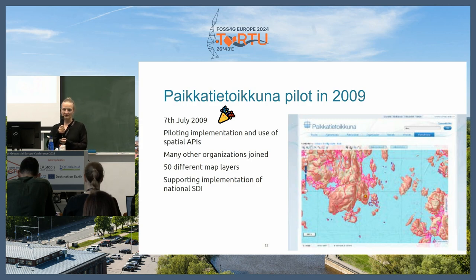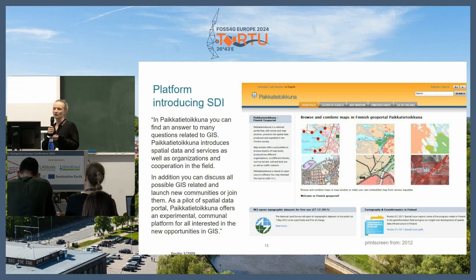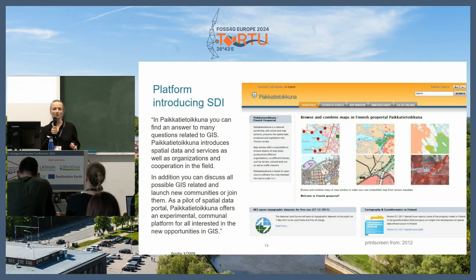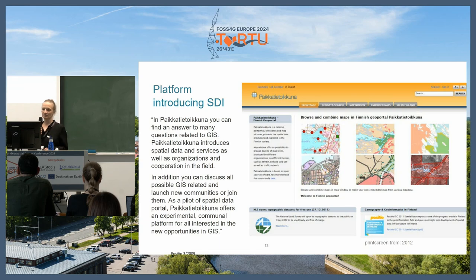Paikkatietoikkuna would become essentially a part of supporting the spatial data infrastructure in Finland. It says that in Paikkatietoikkuna you can find an answer to many questions related to GIS. Paikkatietoikkuna introduces spatial data and services, as well as organizations and cooperation in the field — not just a geo-portal, doing much more. The goal was a lot more: you could discuss GIS-related topics and launch new communities. People would come here and read the news updates about what was happening in GIS in Finland — it was more of an information portal.